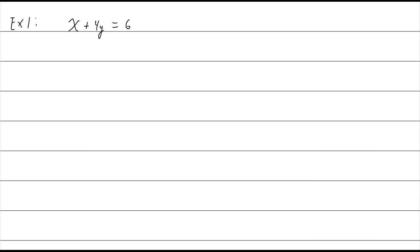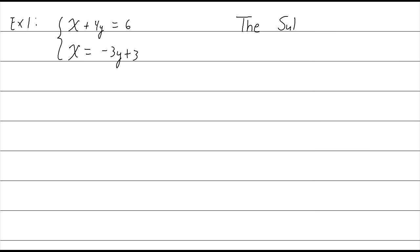For example, you may see x plus 4y equals 6 as the first equation, and x equals negative 3y plus 3 as the second equation. Sometimes you'll see a symbol to say they go together. So here's our first example — we want to know where these two will intersect. We could graph it, but I don't recommend that; it gets more complicated as you go. Instead, we're going to use one of two methods. For now, we're going to do the substitution method.